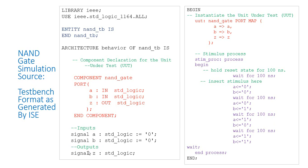We have another signal targeted for output — we are going to use signal Z for the output, which does not have any starting value. It is also standard logic type. This is the component section and signal definition section in the architecture.